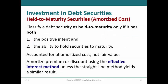A debt security is classified as held to maturity if management has a positive intent and the ability to hold the security to maturity. The securities are accounted for at amortized cost and not fair value, because fair values do not have any relevance to securities that are not going to be sold but will be held to maturity. Companies will normally amortize any premium or discount using the effective interest method unless the straight-line method yields a similar result. It is very important that companies do not classify securities as held to maturity unless they really intend to keep them to maturity. If they sell securities from this portfolio before maturity, the whole portfolio could be tainted by the sale and considered as available for sale.